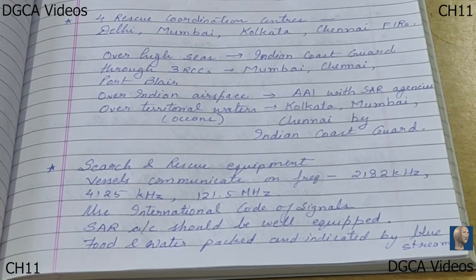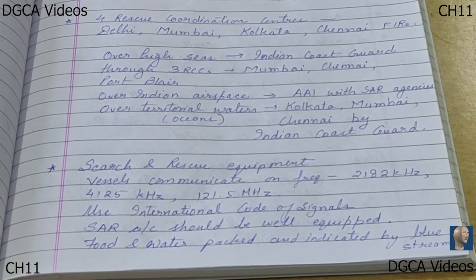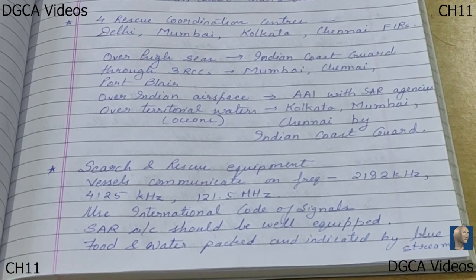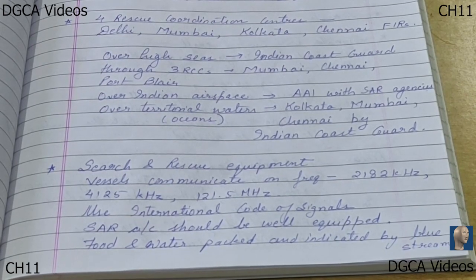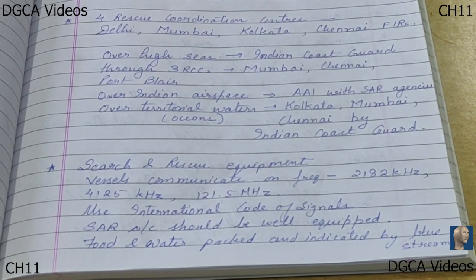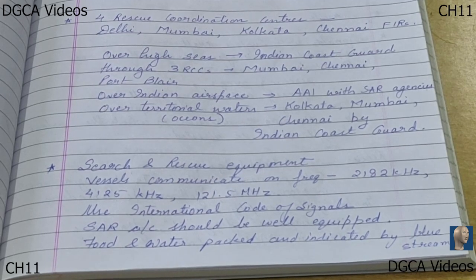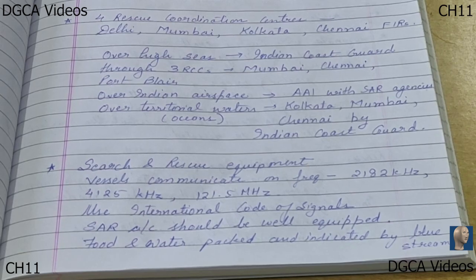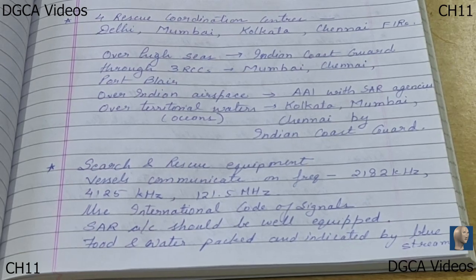Search and rescue operations are not only restricted to Indian territory — they can be done at high seas as well, and persons from other contracting states may be in distress. In order to communicate with them, we use the international code of signals, which is understandable to all people around the world. If the SAR aircraft is dropping food, water, or any other survival equipment, it would be packed in containers and indicated by streamers of blue color.